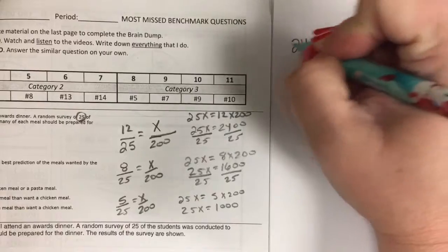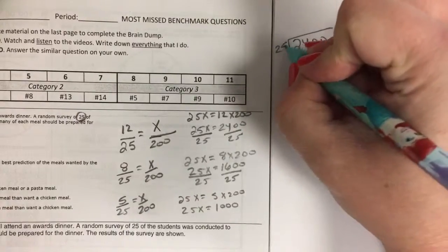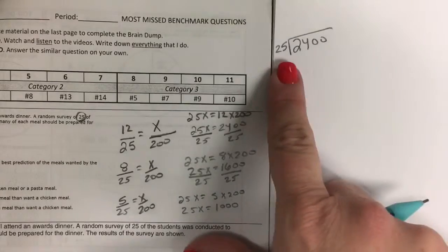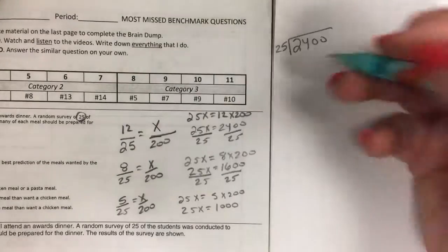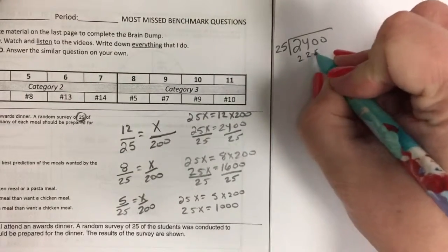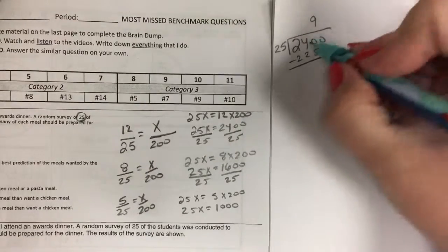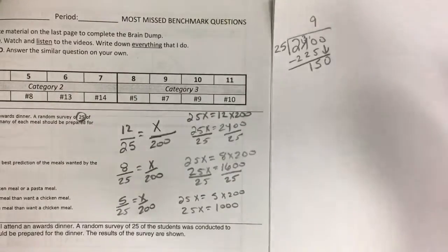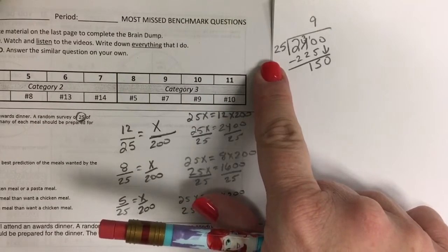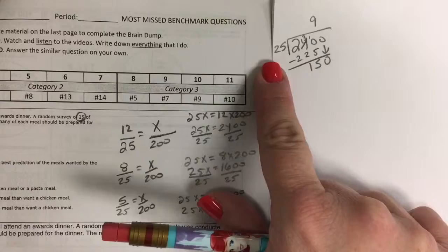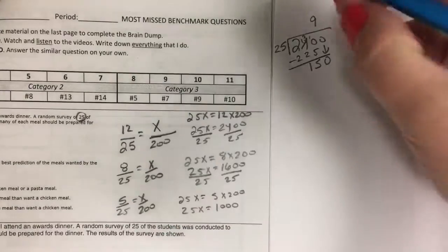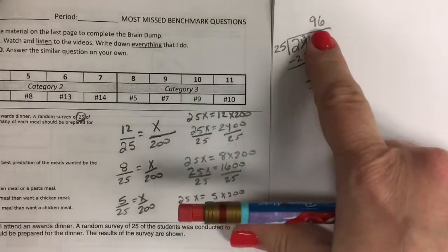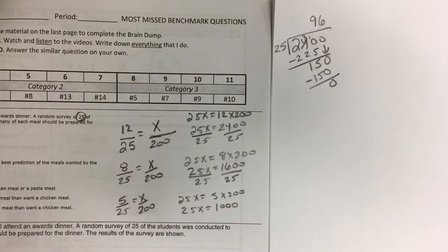So I need to know how many times 25 can go into 2400. Think about quarters. 9 quarters would make $2.25. Subtract, bring down your zero. 25 times 6, 6 quarters would give us $1.50. So we get 96 students who want the beef meal.